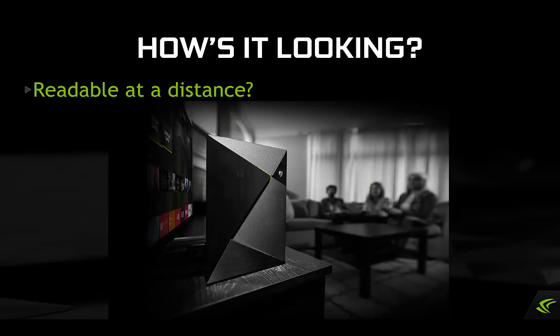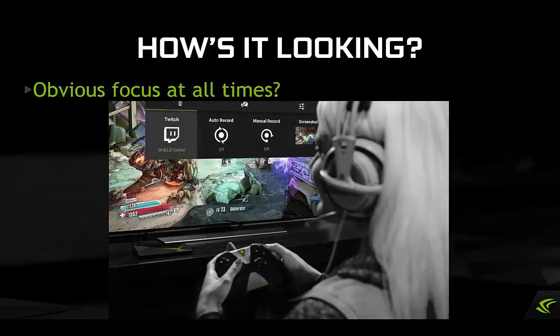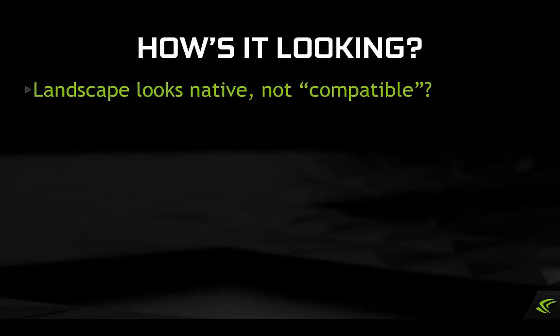Start by looking at your UI on a TV screen at a living room distance. Is everything readable? Is the current focus always obvious? Can a user 10 feet away tell immediately what the focused element is at all times? This may be a visual change from your touch-based UI, since there will be separate focus and select operations rather than a single one, as is seen with a touch UI. Do all of your screens look like they were built for landscape? Do they take advantage of the widescreen layout, or do they feel like some sort of forced compatibility mode? The UI should look like it wants to be in landscape.